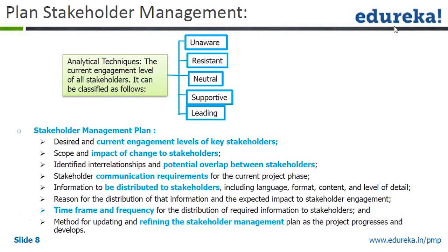The stakeholder management plan will include the desired and current engagement levels of stakeholders, scope and impact of change to stakeholders, identified relationships and interrelationships, potential overlaps between stakeholders, communication requirements, information to be distributed, and the time frame and frequency for refining the stakeholder management.